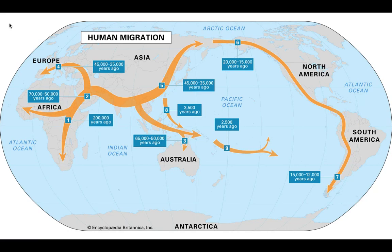On this map, Africa is marked number one, representing 200,000 years ago. From there you can see the movement of people — they moved into South Africa, Western Africa, and also began to move out of Africa entirely, spreading throughout the continent 70,000 to 50,000 years ago. The next place they traveled to was Australia, moving out of Africa through the Middle East, India, and Southeast Asia. Land may have been connected, or they might have used simple canoes and boats to reach Australia.